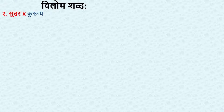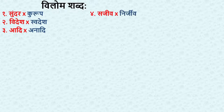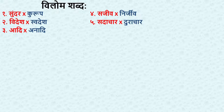Now the first main topic is Vilom Shabd, which means opposite words. The pairs are: Sundar-Kurup, Videsh-Swadesh, Adi-Anadi, Sajeev-Nirjeev, Sadachar-Durachar, and Ayad-Niriyad.